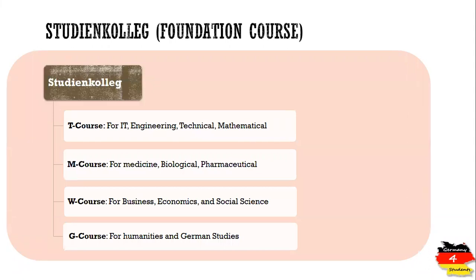There are four different types of courses offered under the umbrella of Studienkolleg, or the foundation course. These four types are based on what you would like to study during your bachelor's degree. The four types are: T course, M course, W course, and G course.